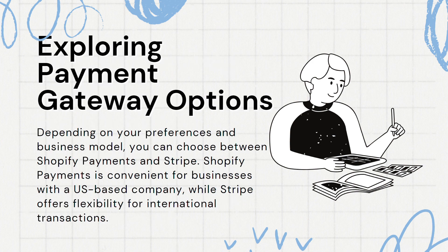Number 8: Exploring Payment Gateway Options. Depending on your preferences and business model, you can choose between Shopify Payments and Stripe. With Shopify Payments, you can easily manage your transactions directly within the Shopify platform, streamlining the process of accepting payments and tracking orders. Additionally, Shopify Payments provides competitive rates and reliable customer support, making it an appealing choice for many merchants.